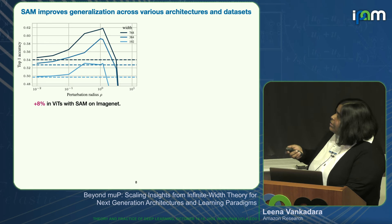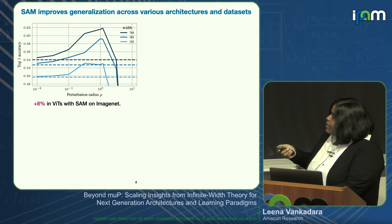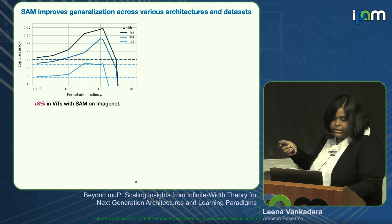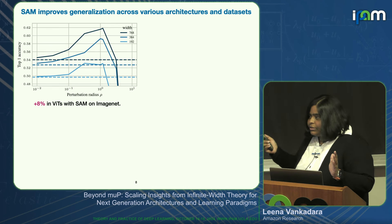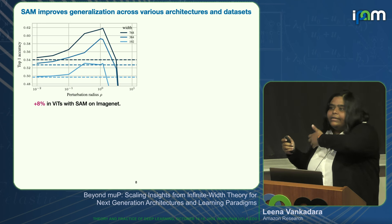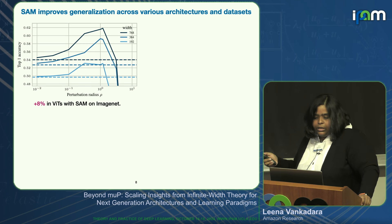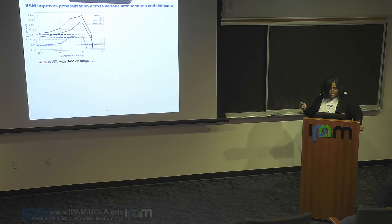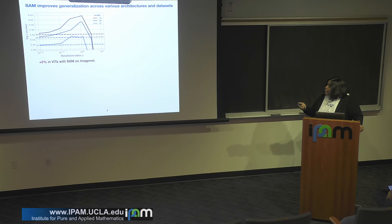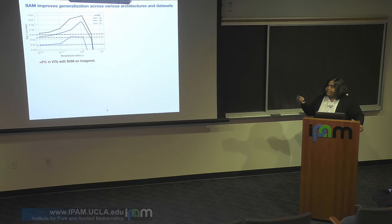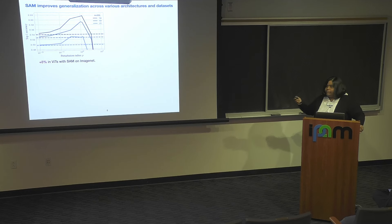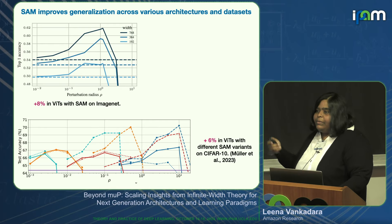Let me show some empirical results. This figure shows that SAM improves generalization across many architectures and datasets, particularly for vision tasks and language model fine-tuning. The plot shows test accuracy versus perturbation radius for vision transformer models trained at different widths. Dashed lines are AdamW baselines, solid lines are SAM for different perturbation radii. For the largest width, you get about 8% improvement on ImageNet.